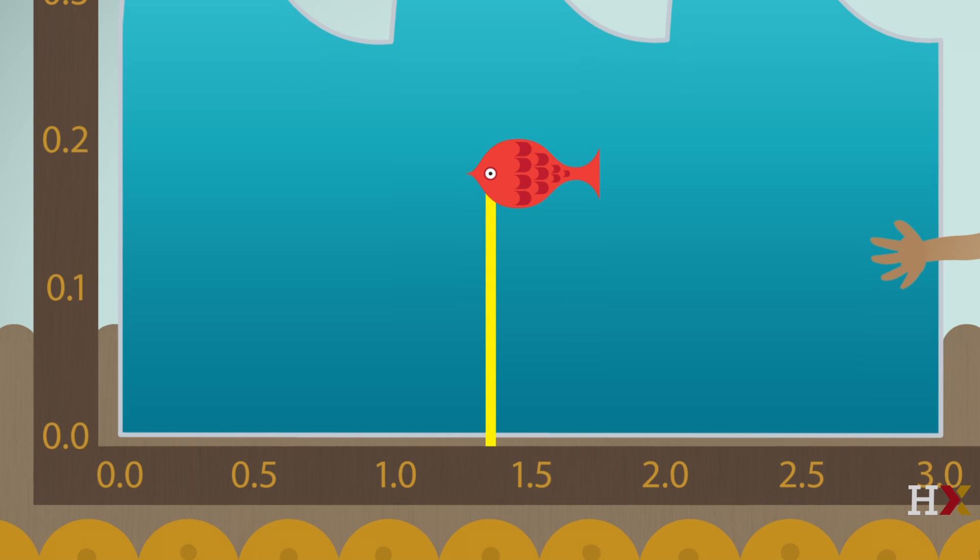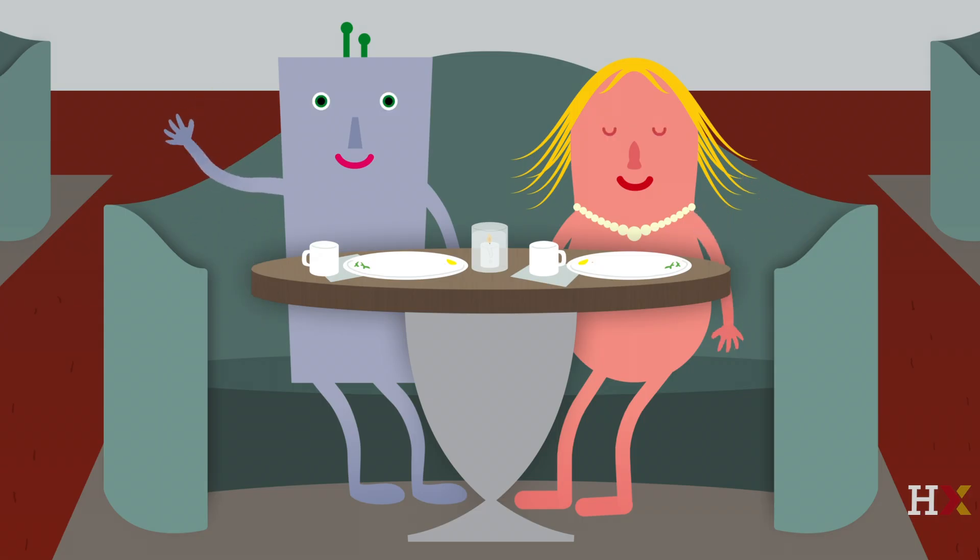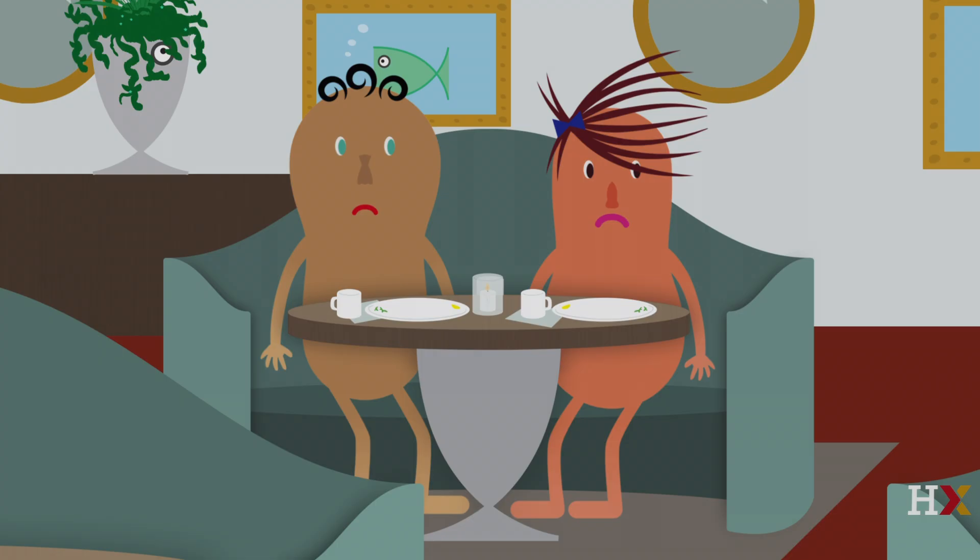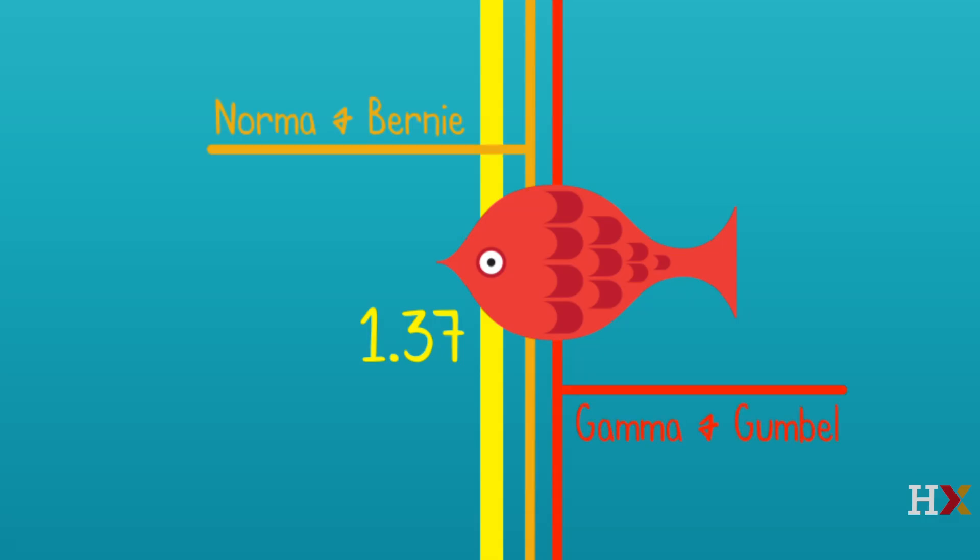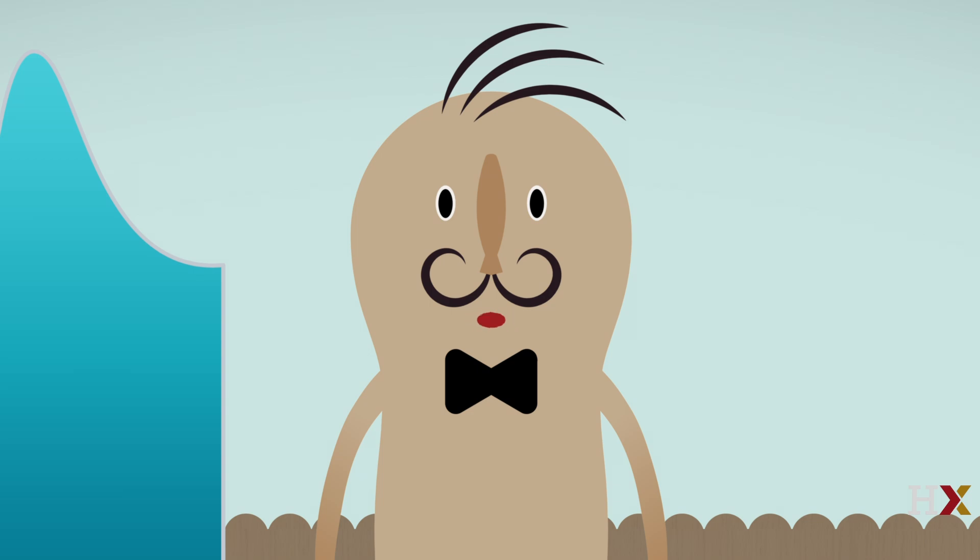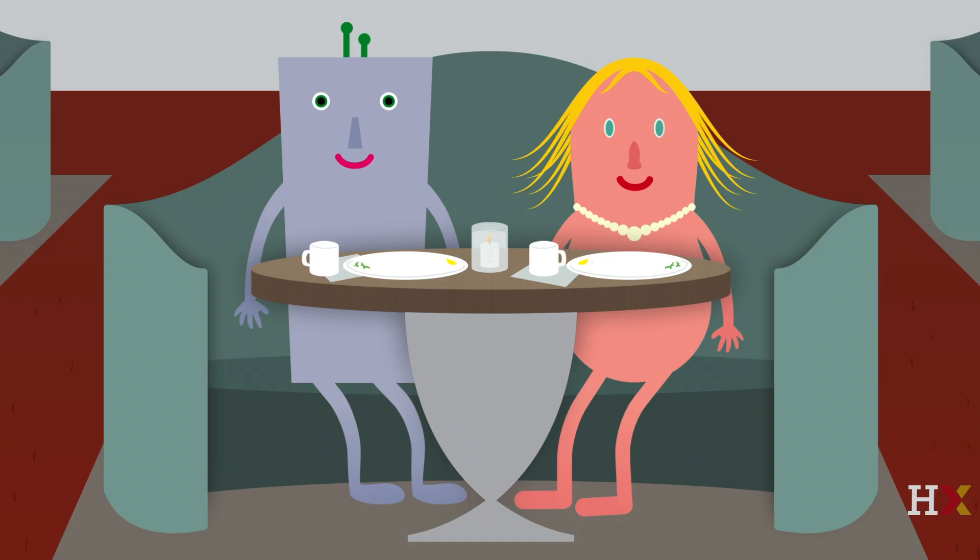There's Randy at 1.37. Norma and Bernie guessed 1.42, while Gamma and Gumbel guessed 1.46. Congratulations, Norma and Bernie. Your outstanding thinking about averages has earned you a free trip to the Statland Games in Averagemont.